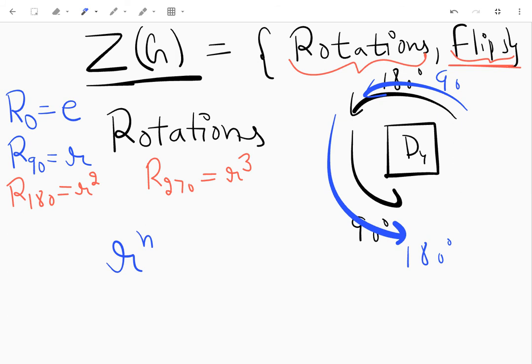So now I have to find those rotations - I don't know what n is, it could be one, two, three, four - so I have to find those rotations F r^n which commute with flip. So I have to find these n's which commute with all the flips.